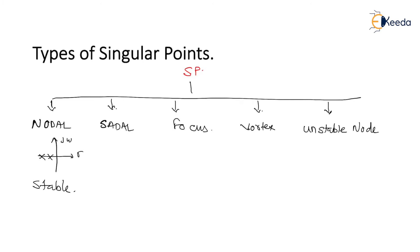On the same way, for unstable node, on the j-omega axis, all the poles are on the right-hand side (RHS) of the s-plane, and hence for this reason the unstable node is by default unstable in nature. As the name indicates, it is unstable in nature.